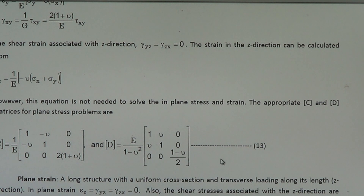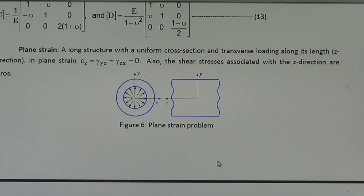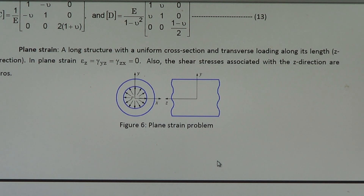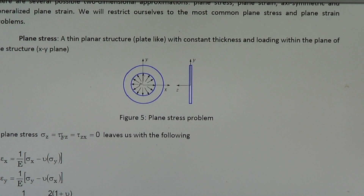For plane strain, these structures are really long in the z-direction and loaded transversely or along their length. We can assume that the strains in the z-direction are zero. In contrast, for the plane stress case, all the stresses in the z-direction — both normal and shear — were zero.